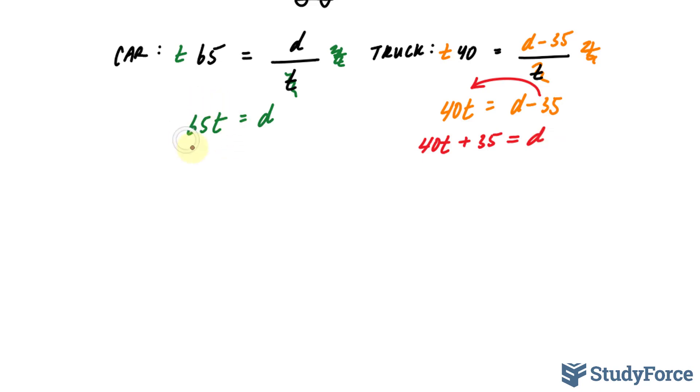Next, I'll take the content of D in this equation, 65T, and the content of D in this equation, and make them equal to one another.